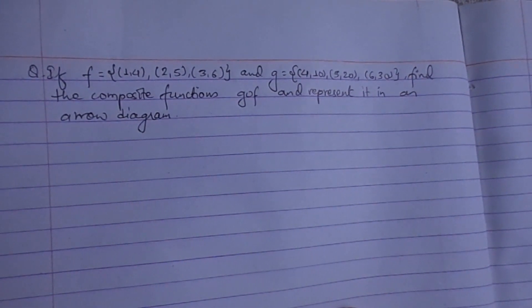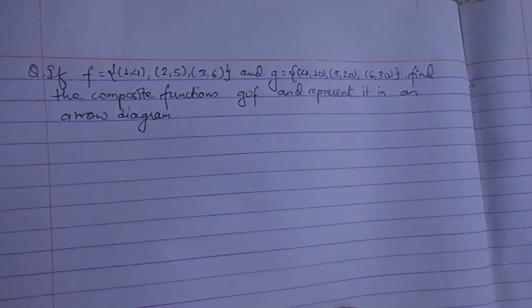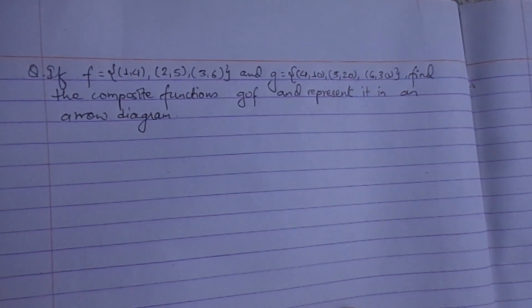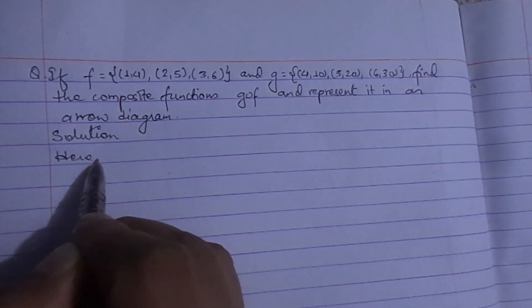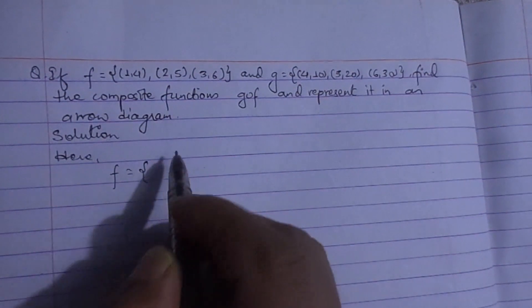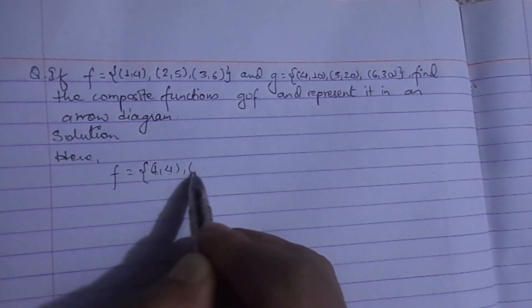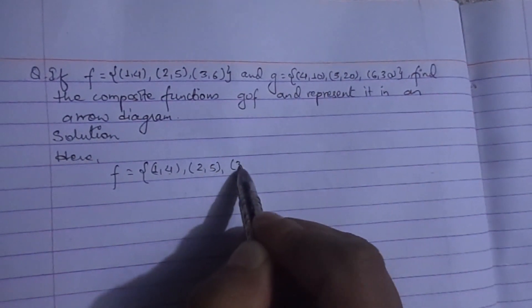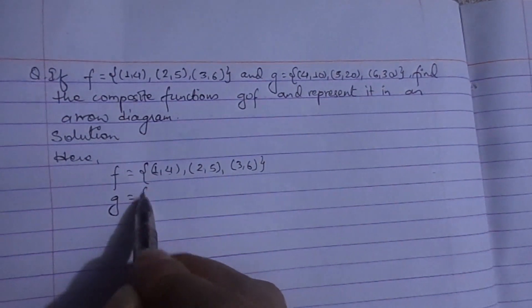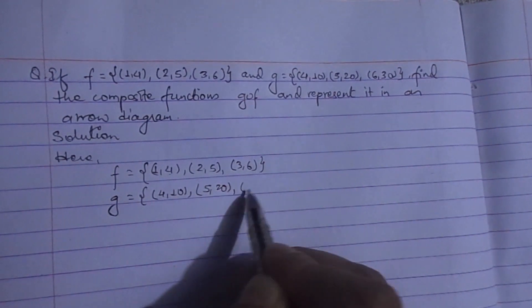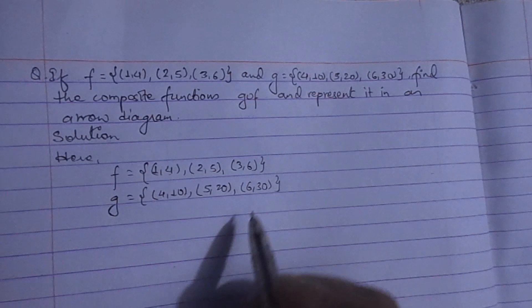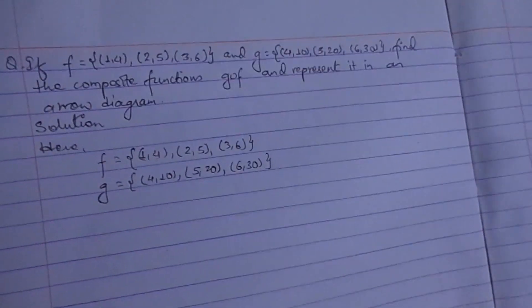If function f equals to {(1,4), (2,5), (3,6)} and g equals to {(4,10), (5,20), (6,30)}, find the composite function gof and represent it in an arrow diagram. Solution: function f equals {(1,4), (2,5), (3,6)}, function g equals {(4,10), (5,20), (6,30)}.